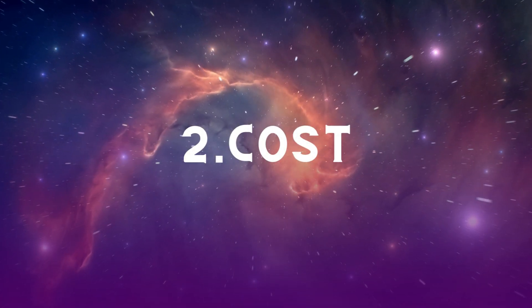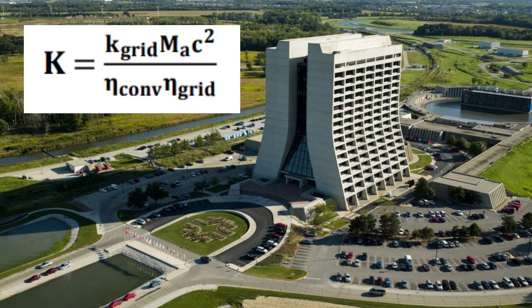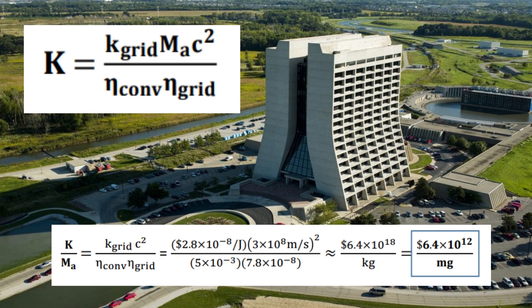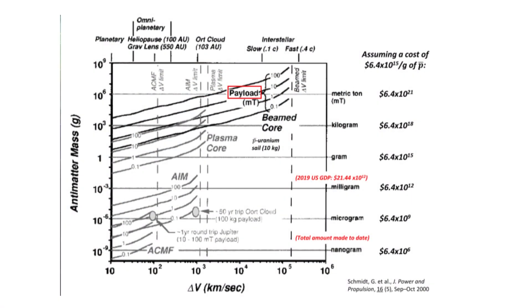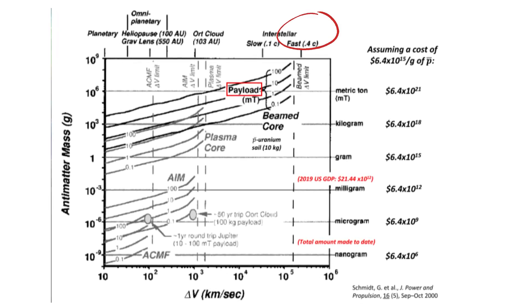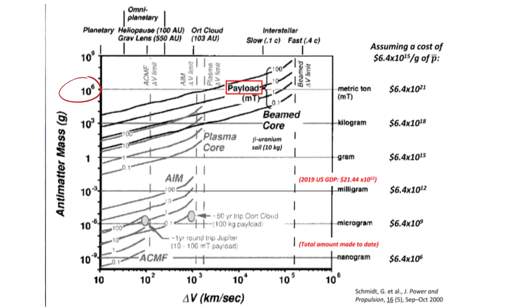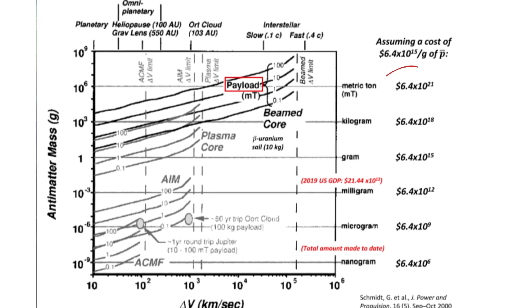Now let's look at the cost of production. Schmidt estimated antiproton production cost using a specific formula. Based on rough Fermilab values, the cost is around a mind-blowing $6,400 trillion per milligram, making antimatter the most expensive substance on Earth. To reach 0.4 times the speed of light, we would need around a million grams of antimatter, at an estimated cost of $6.4 × 10²¹ with current technology.